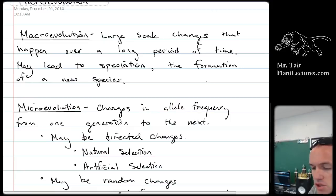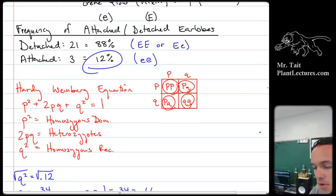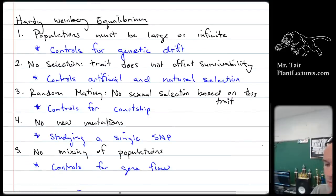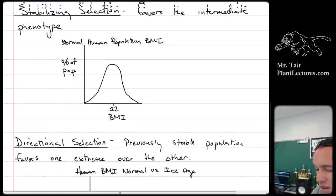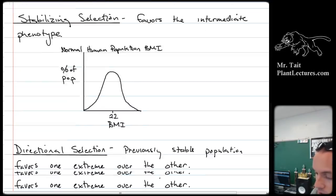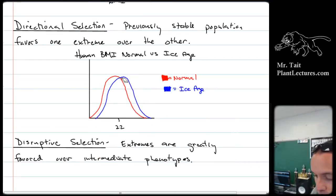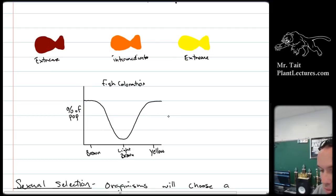Microevolution versus macroevolution: macroevolution says that species change over large periods of time, and microevolution is how they change from generation to generation. We said we can use the Hardy-Weinberg equation to figure out the frequencies of alleles, and an organism is in Hardy-Weinberg equilibrium as long as all the conditions are true. Those conditions prevent evolution from happening — preventing selection and genetic drift. There are three different types of natural selection: stabilizing selection favors the intermediate phenotype, directional selection favors the intermediate phenotype shifting towards one of the extremes, and disruptive selection favors the extremes over the intermediate phenotype.